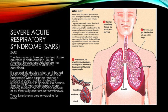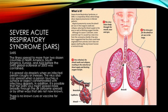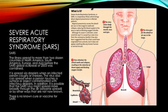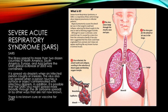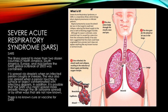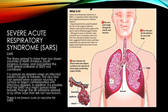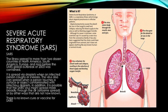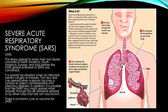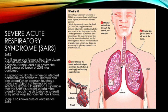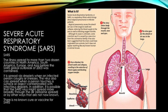Severe acute respiratory syndrome, SARS. The illness spread to more than two dozen countries in North America, South America, Europe, and Asia before the SARS global outbreak of 2003 was contained. It is spread via droplets when an infected person coughs or sneezes. The virus can also spread when a person touches a surface or object contaminated with infectious droplets.